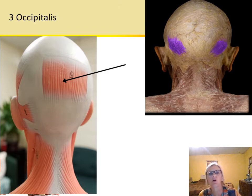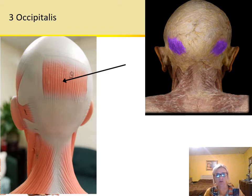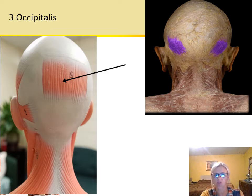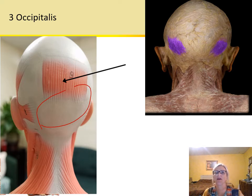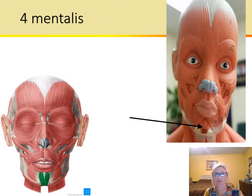Remember the occipital bone from the skeletal system — that will cut down on your study time. These muscles are sometimes grouped together as 'occipitofrontalis,' referring to both muscles. However, I'll ask for either occipitalis or frontalis separately, so be careful. Occipitofrontalis spans from back to front of the head, connected by the aponeurosis. Occipitalis pulls the scalp posteriorly, and the frontalis portion elevates the eyebrows.